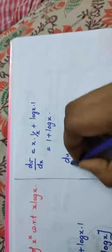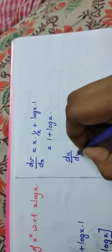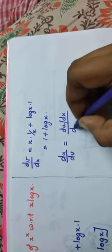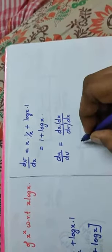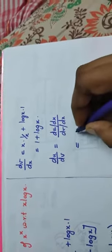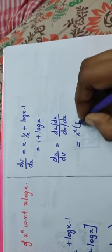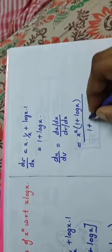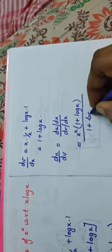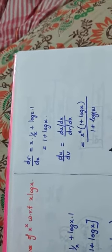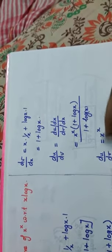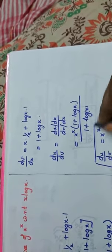So what is my answer? du/dv = du/dx divided by dv/dx = x^x · (1 + log x) divided by (1 + log x). We can cancel both (1 + log x) terms. So du/dv = x^x. That is the answer for this first assignment problem.